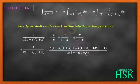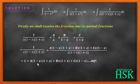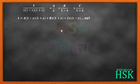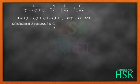Both denominators on left and right-hand side are equal, so they cancel out. I get 1 equals A into 1 minus x into 1 plus x, plus B times x into 1 plus x, plus C times x into 1 minus x. I mark this as equation number one, and will use it to solve for A, B, and C.